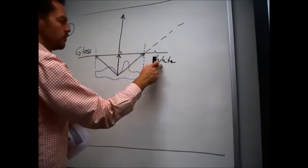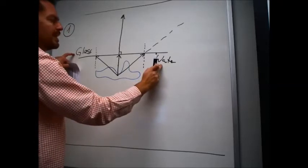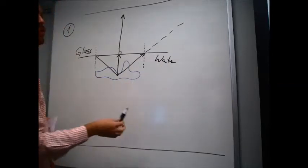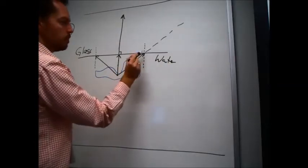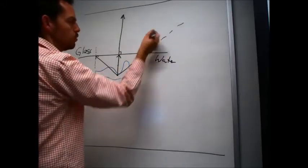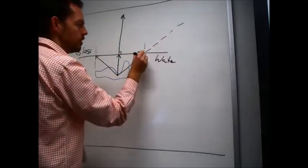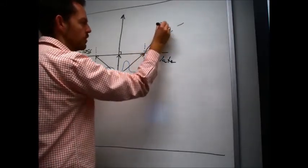...it's entering from water into glass, and glass is a denser medium. If it goes into a denser medium, that beam will be bent towards the normal. So it won't travel like that, but will travel like that.